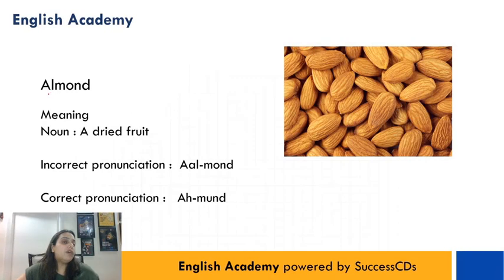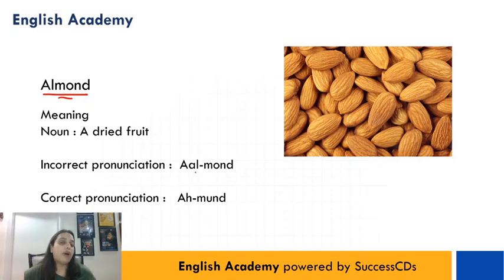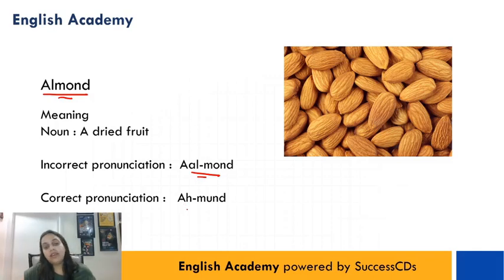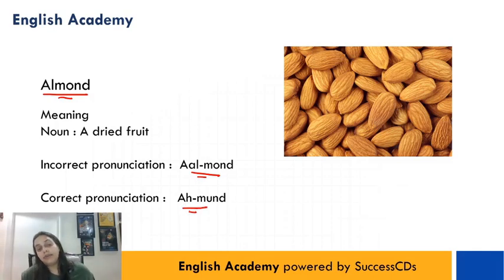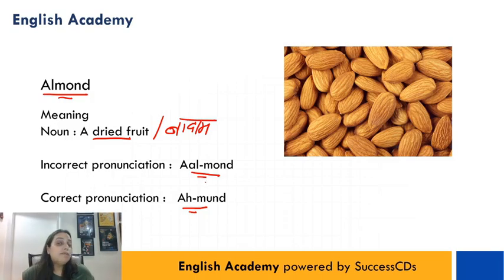The next word is A-L-M-O-N-D. Log usually isse pronounce karte hain 'almond', but iski correct pronunciation is 'almond'. Aur iska matlab hota hai a dry fruit. Toh aapka jo baadam hota hai, woh 'almond' nahi hota, woh hota hai 'almond'.